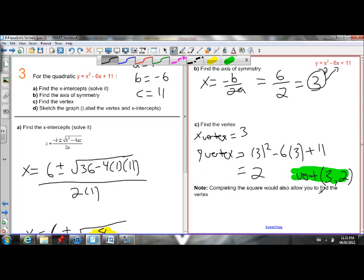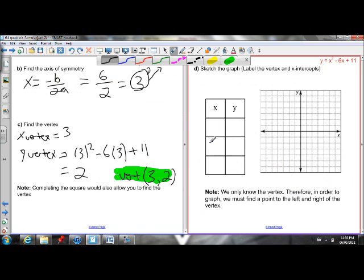Note, we could have also found this vertex by completing the square if we wanted to. I find it a lot less work just to use this, find the x-coordinate, the axis of symmetry, plug that in, find the y-coordinate. But you could complete the square as well and find your vertex.